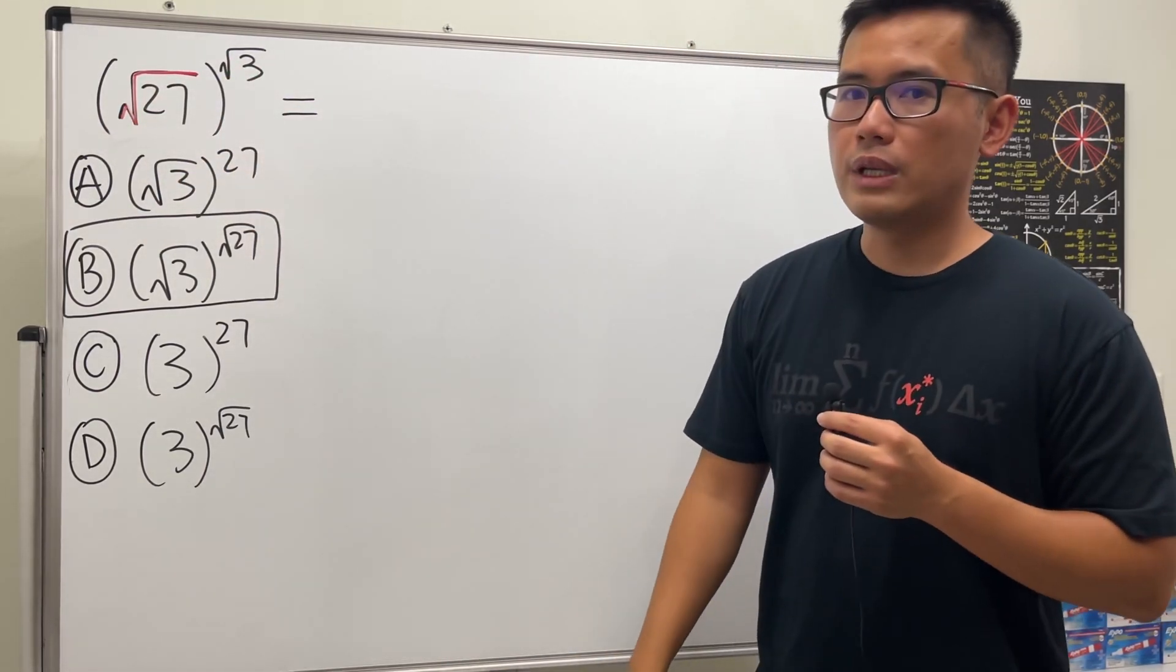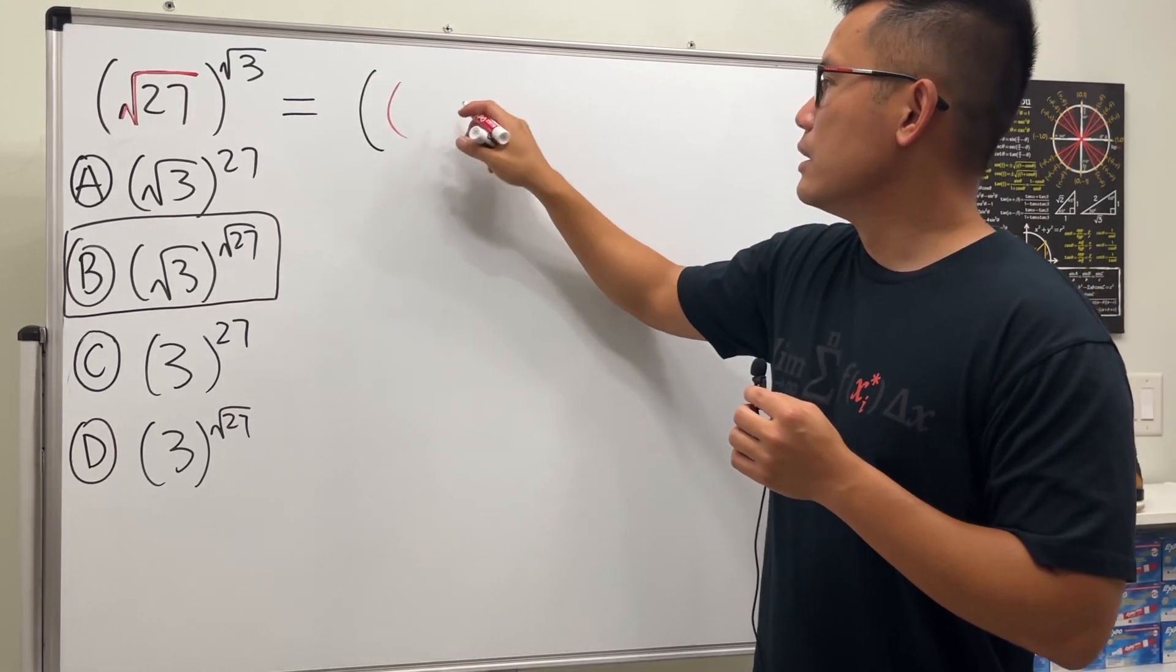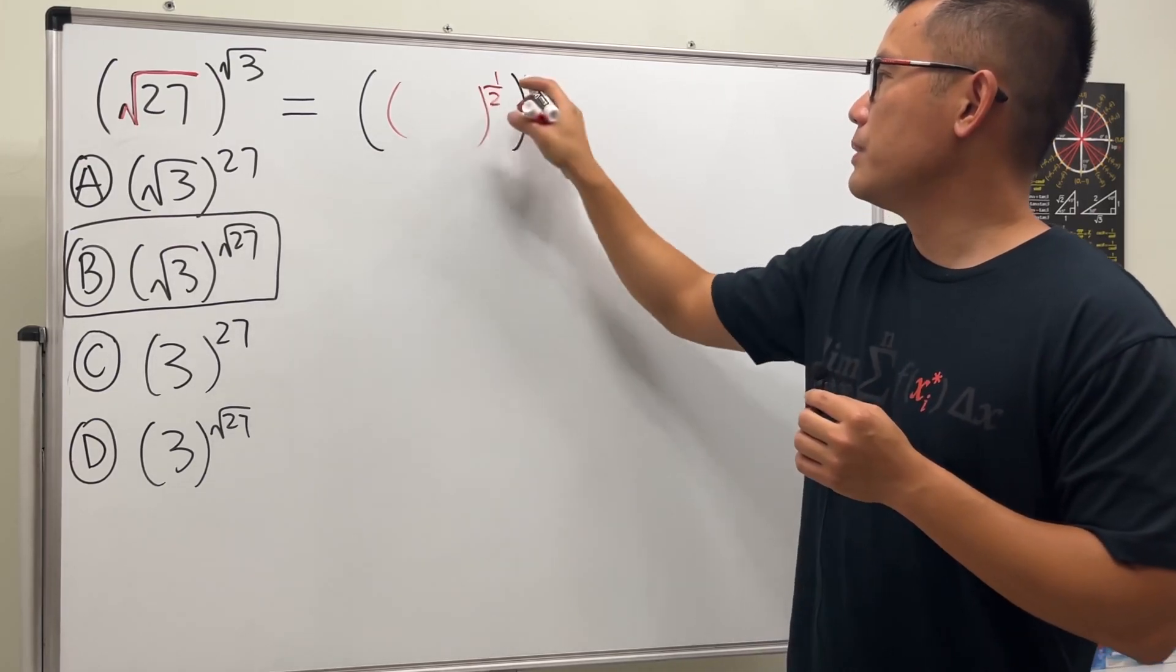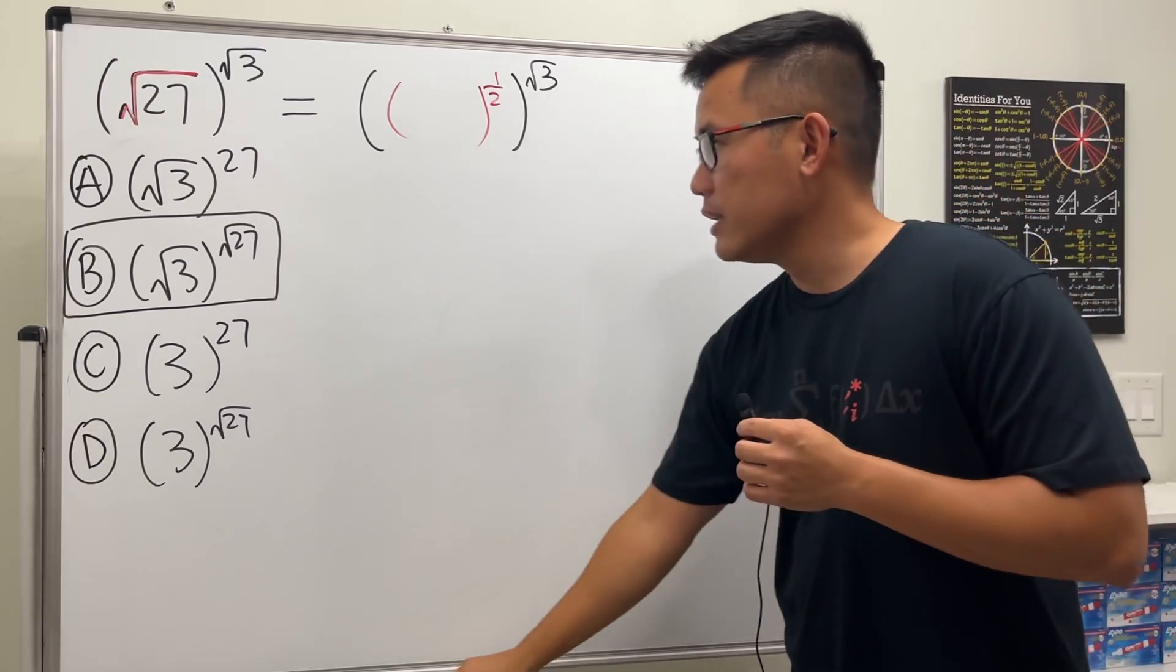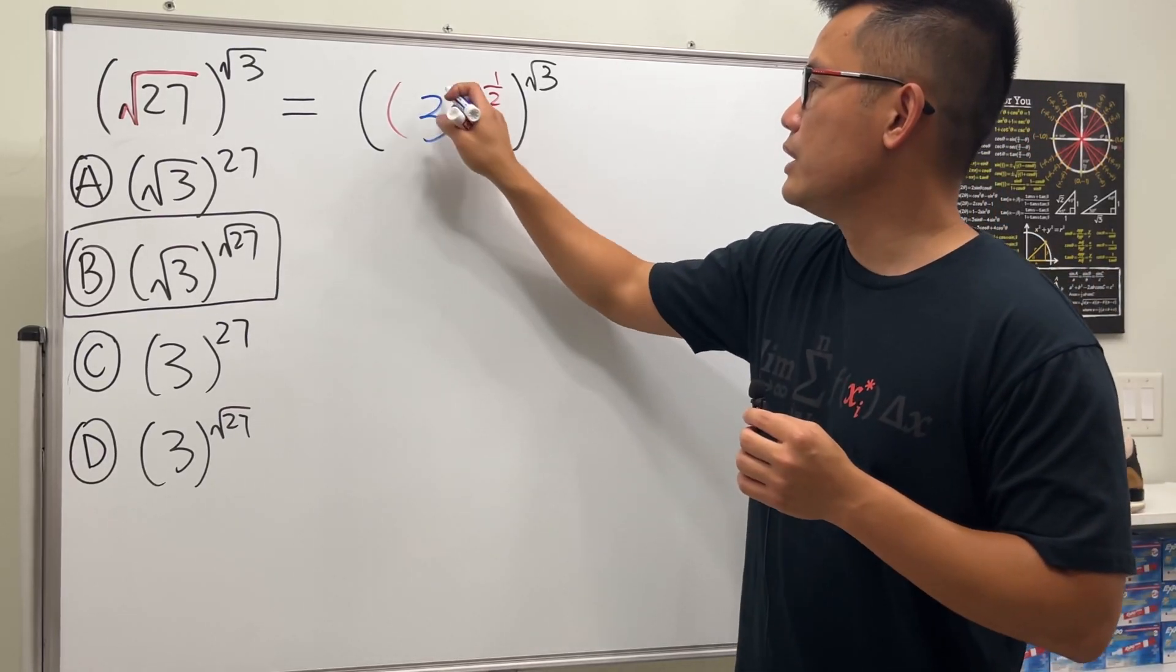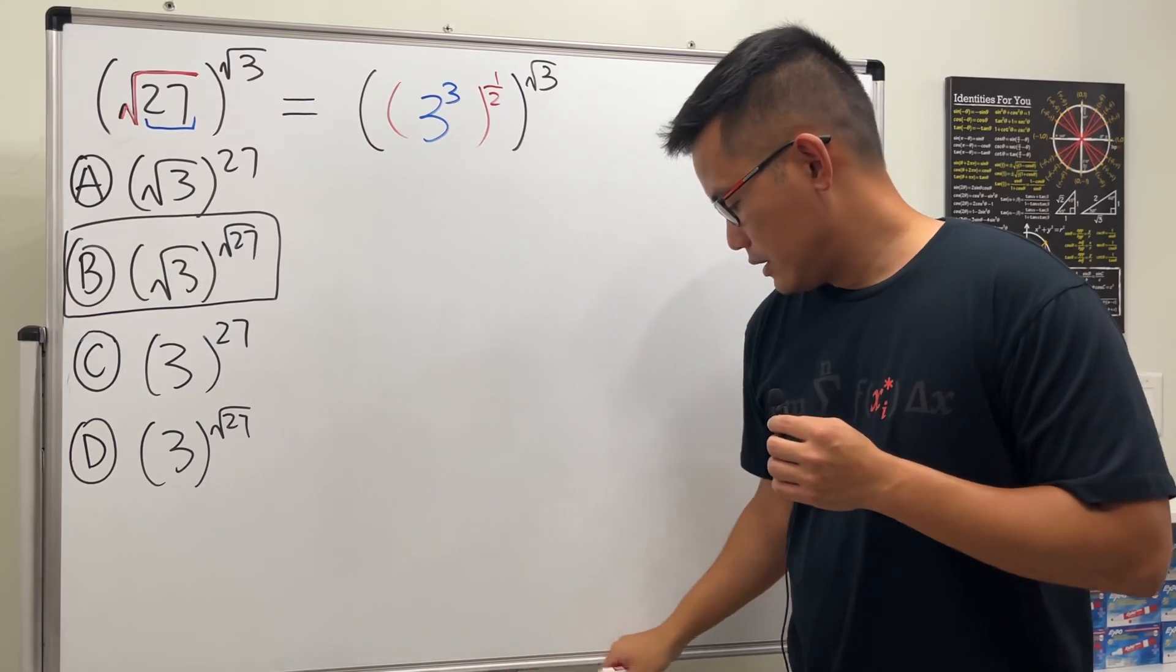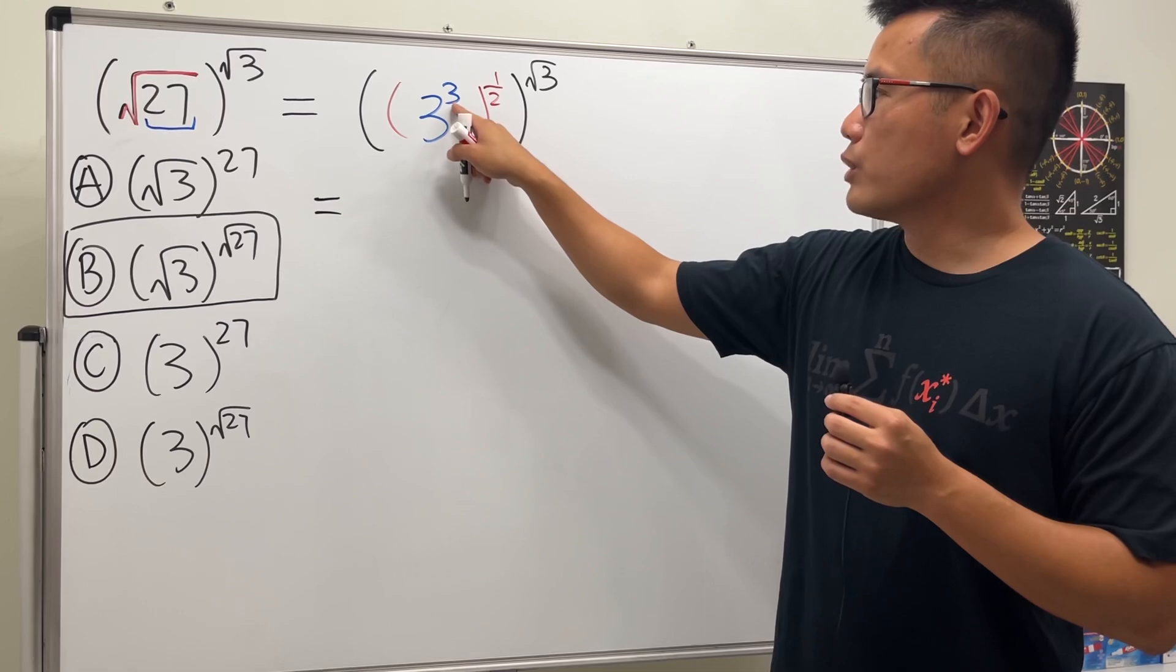Firstly we can write the square root as the one half power, so this right here is the same as 27 and then here we have the one half power and I'll keep the square root of three power right here. And then for the inside, 27 is the same as 3 times 3 times 3, and that is 3 to the third power.